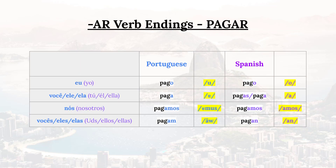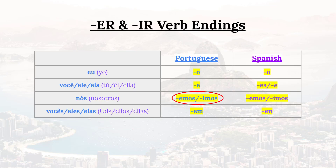So summarizing the present tense verb endings for regular AR verbs using 'pagar' as an example: we have 'pago,' the O pronounced with a 'u' sound; 'paga,' the A pronounced 'ah' as in Cuba; 'pagamos,' and then 'pagam,' the AM pronounced with the nasal 'ão' sound.